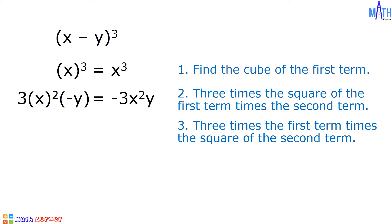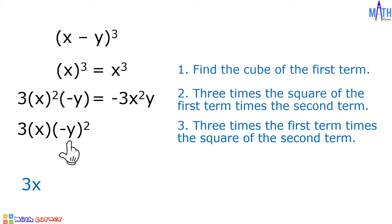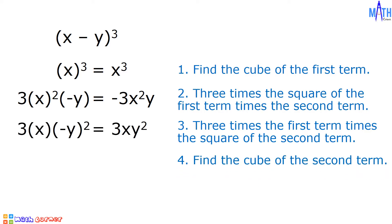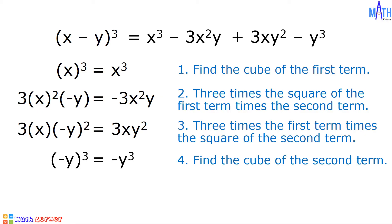Step number 3: 3 times the first term times the square of the second term. We have 3 times x times square of negative y. 3 times x is equal to 3x. Square of negative y is equal to positive y squared. 3x times y squared is equal to 3xy squared. Last step: the second term is negative y. Cube of negative y — negative y times negative y times negative y — is equal to negative y cubed. And the cube of x minus y equals x cubed minus 3x squared y plus 3xy squared minus y cubed.